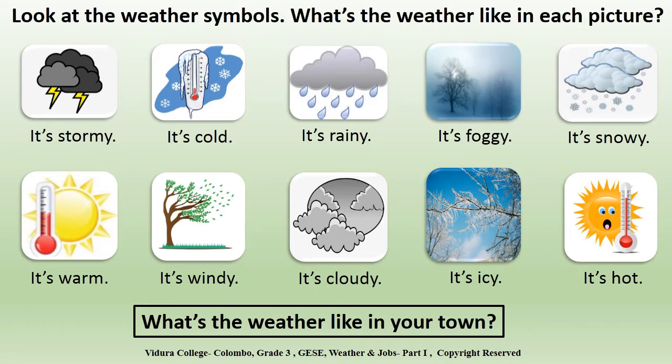Next one, it's cloudy. When the sky is covered by clouds, we call it cloudy. Next one, it's icy. When the surrounding is covered with ice, we call it icy. Last one, it's hot. When there is a high temperature, we call it hot.